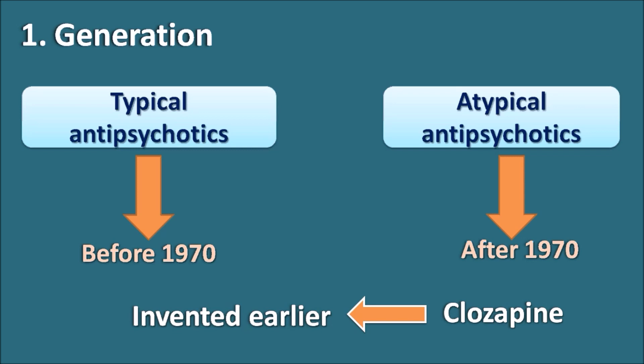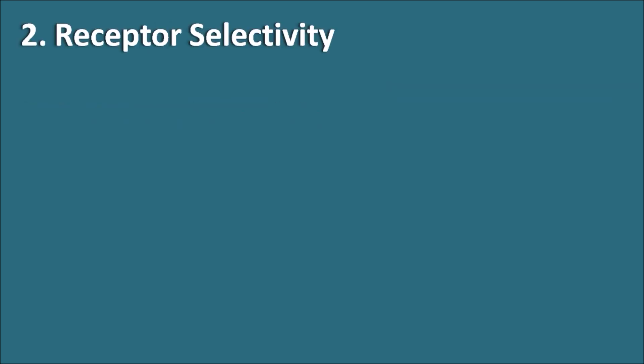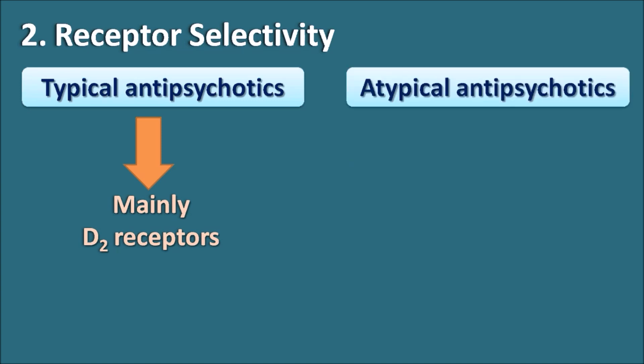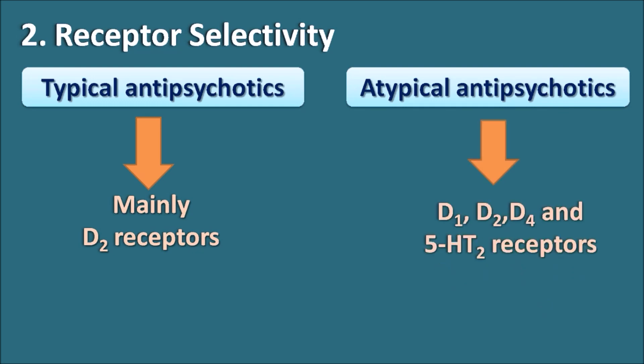The second difference is receptor selectivity. Typical antipsychotics mainly block D2 receptors, which are abundant in the mesolimbic and mesocortical pathways. This D2 blockade is responsible for the antipsychotic action of typical agents. Atypical antipsychotics, on the other hand, not only block D2 receptors but also block D1, D4, and 5-HT2 receptors.